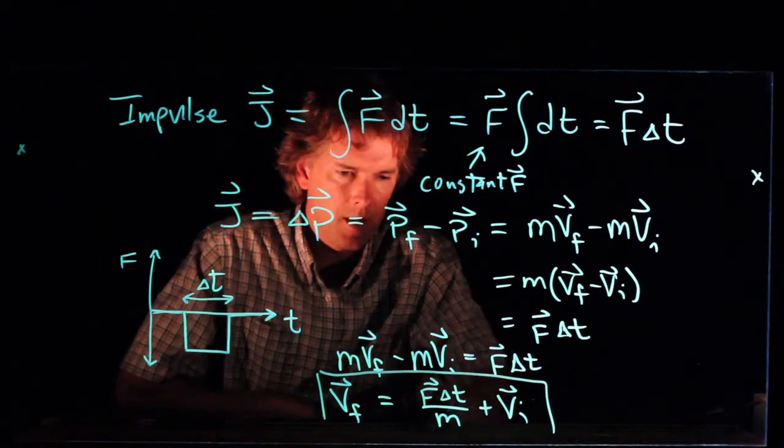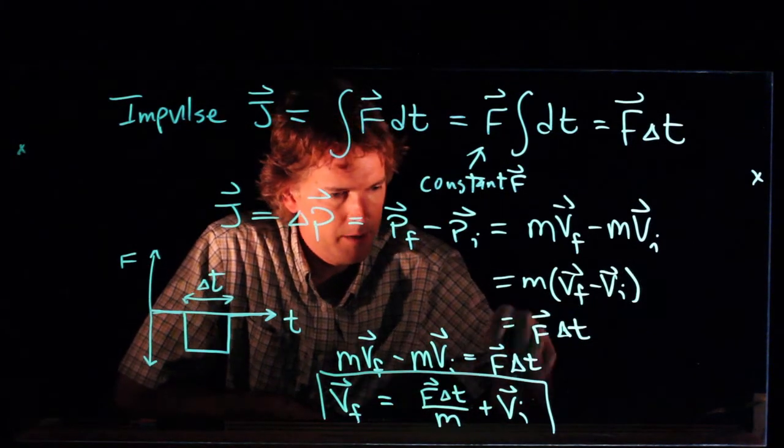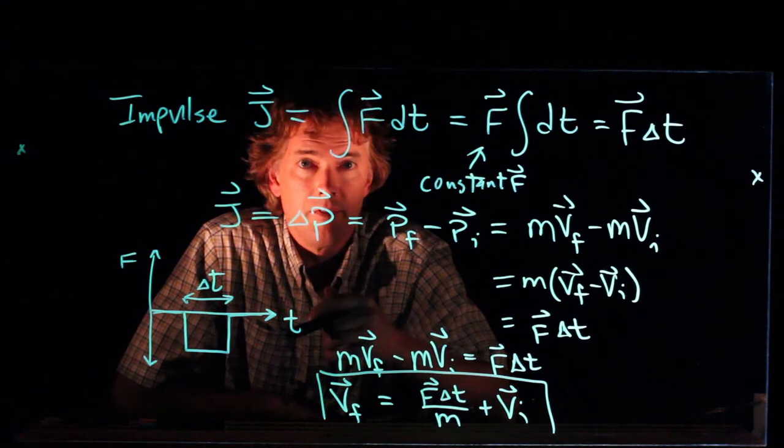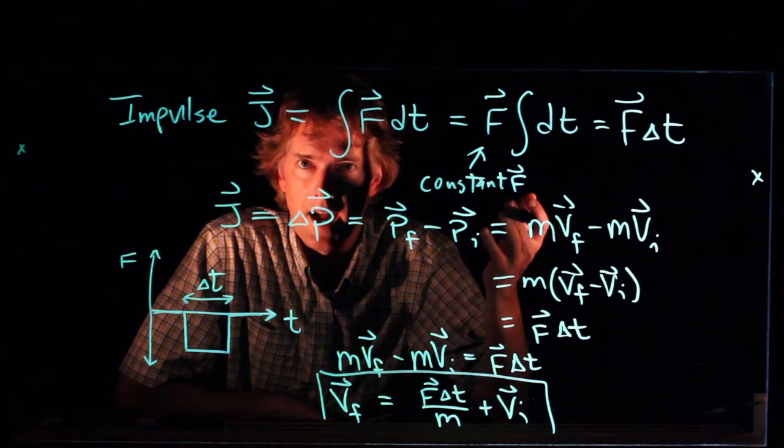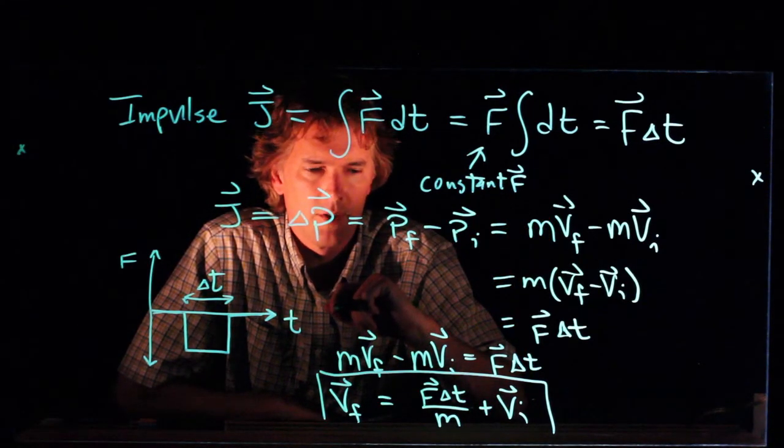And if you're given m, and you're given f and delta t, and you're given v initial, then you can calculate v final. If v final is a positive number, it's moving in the positive x direction. If it's a negative number, it's moving in the negative x direction.